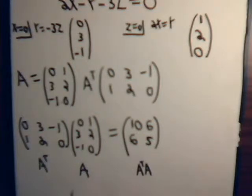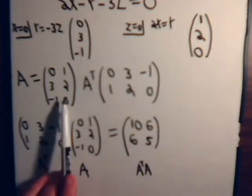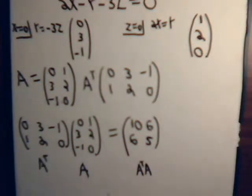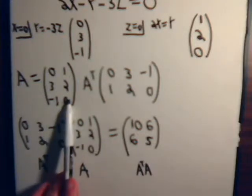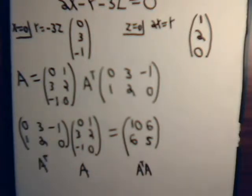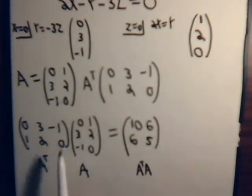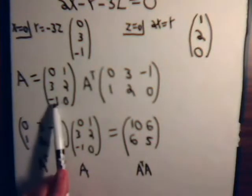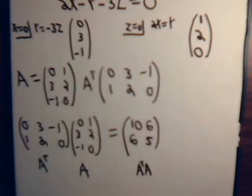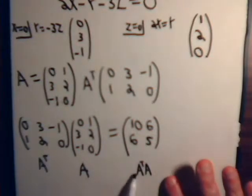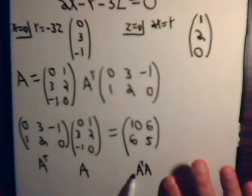Furthermore, since matrix A has two columns and both are linearly independent, A transpose A will have an inverse. When you multiply these matrices together you get a square matrix, and it will be symmetric. If all the columns of matrix A are linearly independent, this matrix will be non-singular — it will have an inverse. That is a fact we will prove in a future video.